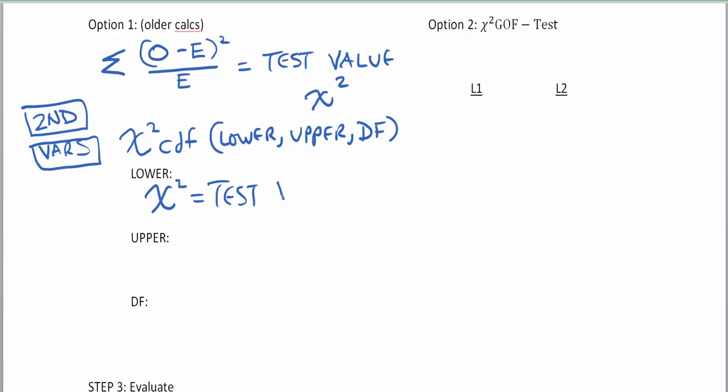And since chi-squared tests are almost unanimously right tail tests, your upper value is going to be infinity. But the calculator doesn't understand the symbol infinity so we're going to use 10 to the 99th power or a one with 99 zeros. Now the degrees of freedom is going to be the number of categories minus one. That's your degrees of freedom.